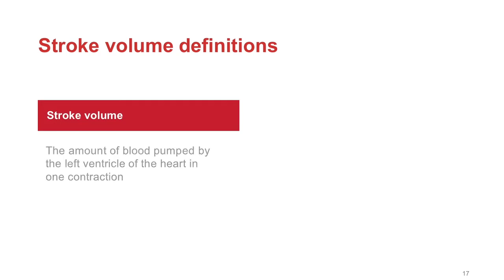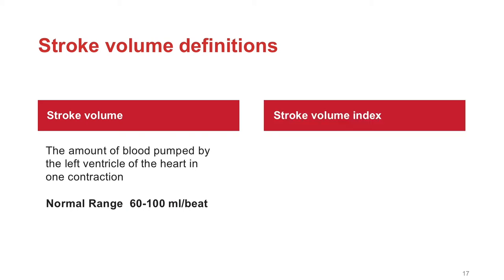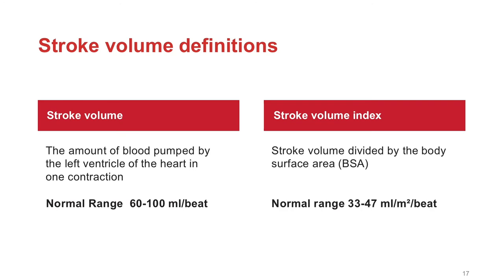Some definitions of stroke volume: stroke volume itself is the amount of blood pumped by the left ventricle in a single contraction, with a normal value of approximately 60 to 100 mls per beat. We can index this for body surface area to give stroke volume index, with a normal range of 33 to 47 mls per metre squared per beat. The fundamental reason to give any patient a fluid challenge is to increase their stroke volume and hence cardiac output, and therefore it is essential to measure stroke volume or a robust surrogate measure of the likelihood to increase stroke volume to a fluid bolus.